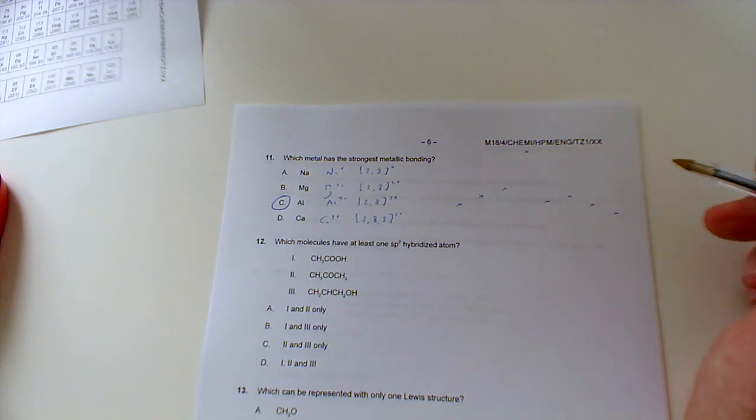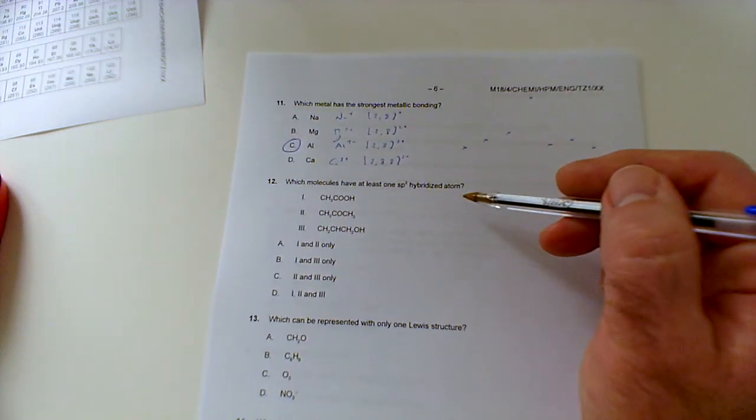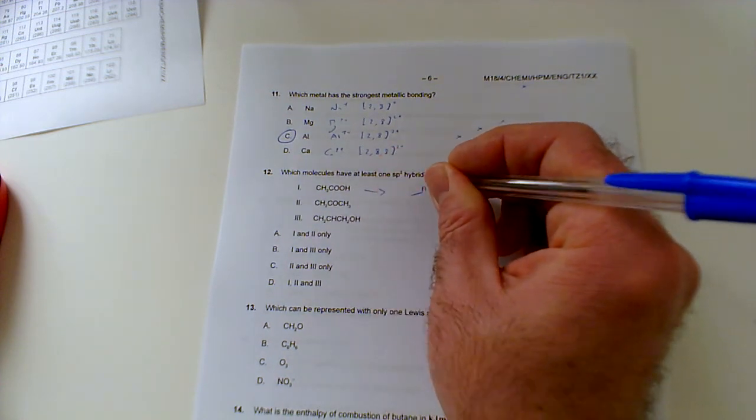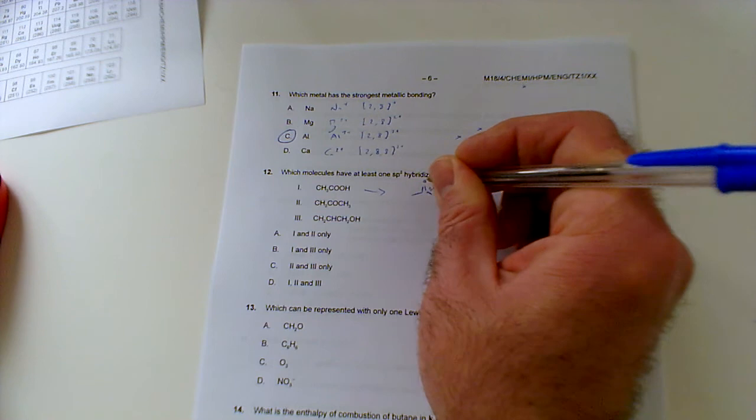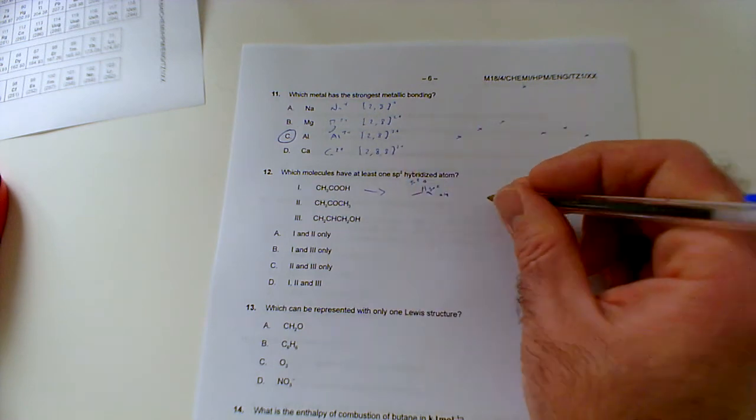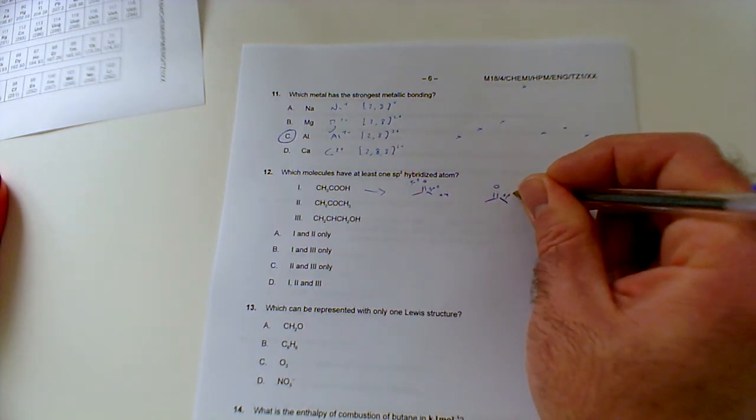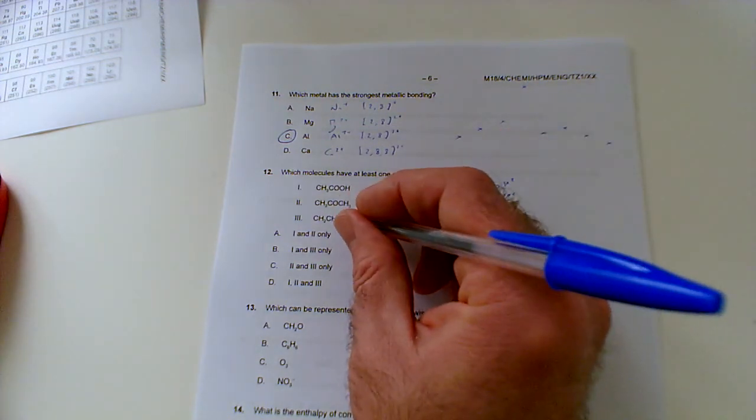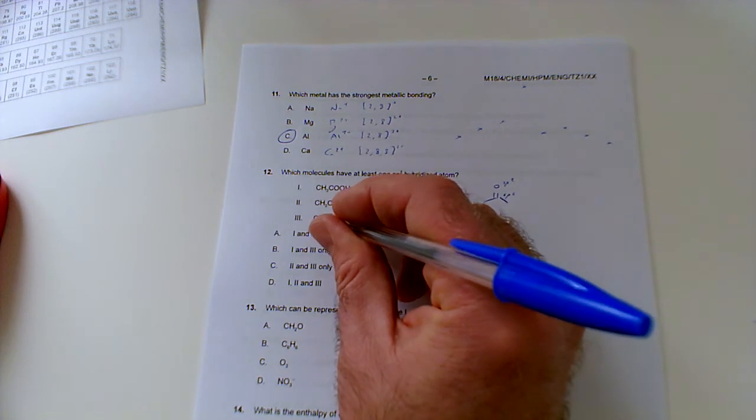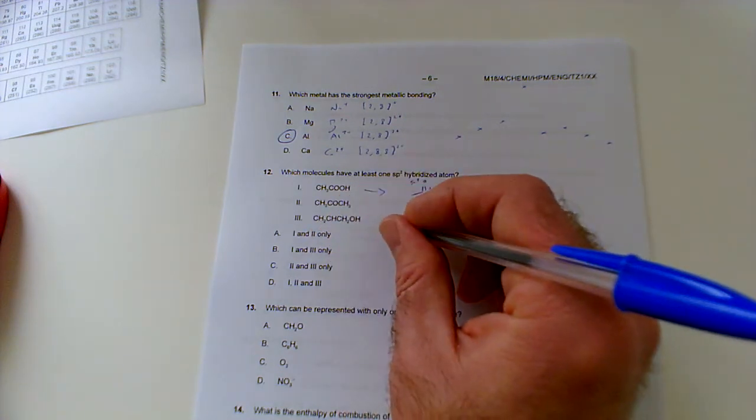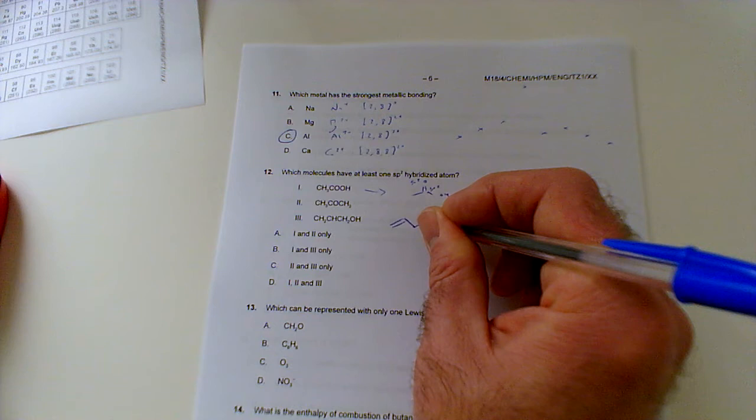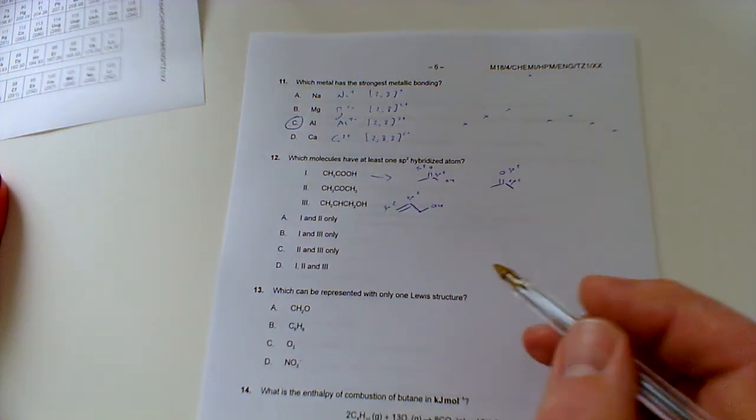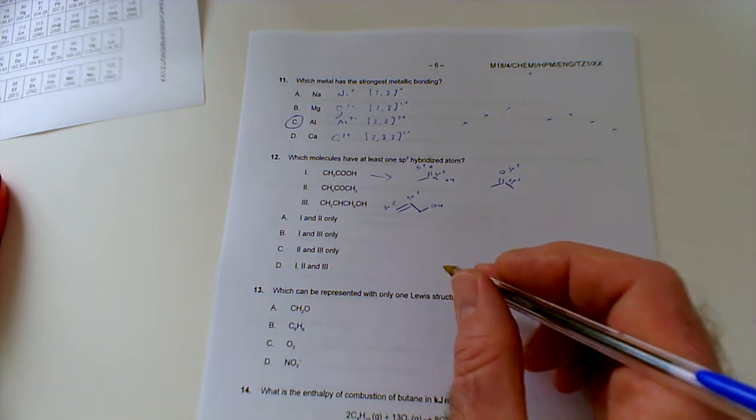Number 12: which molecules have at least one sp2 hybridized atom? Let's draw these out. Here's ethynoic acid, we've got a double bond so that's going to be sp2 and sp2. Propanol, again we've got a double bond so that's going to be sp2, sp2. The other two carbons here are sp3. Okay it looks like propanol but it's not, watch out here because it's not CH3CH2. It's actually an alkene with then an alcohol there, so again we've got a double bond. This would be sp2 and sp2.